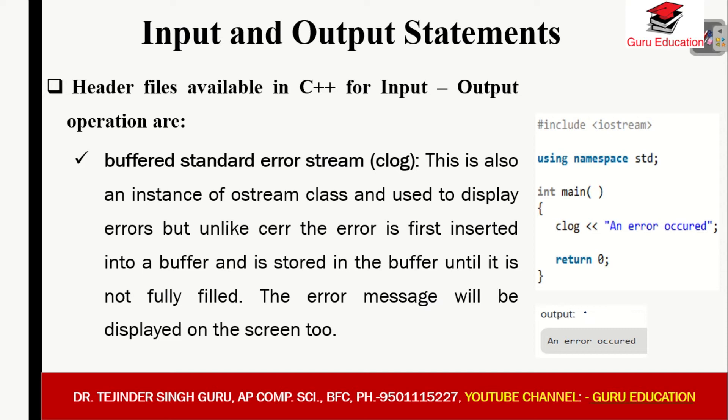When using clog, this process happens immediately in the background — it is very fast. The whole process runs automatically in the backend. You only see the final message displayed. This buffering helps the processor.